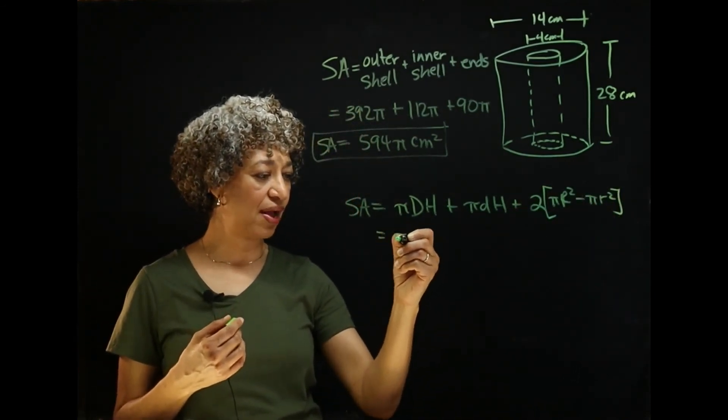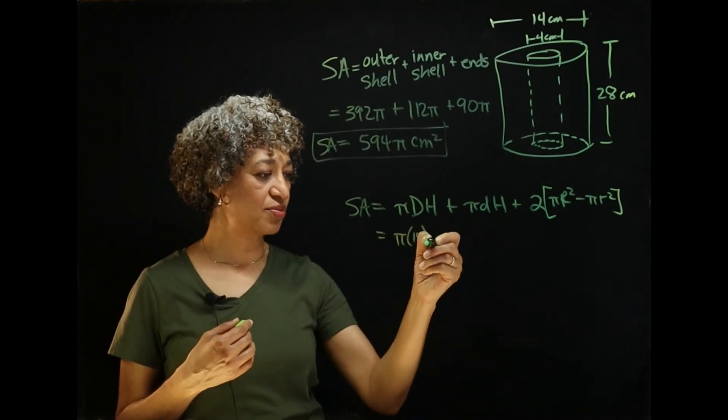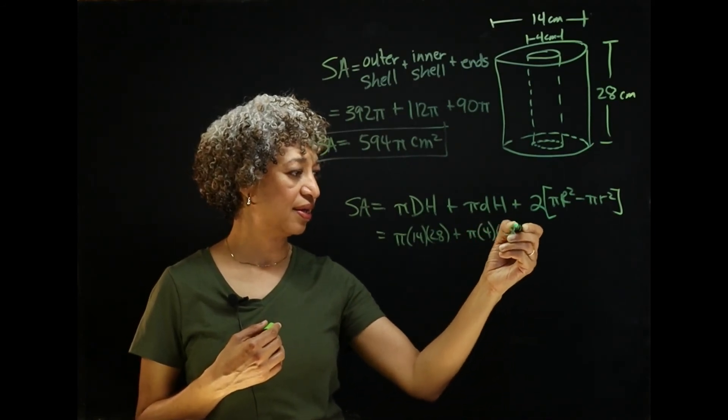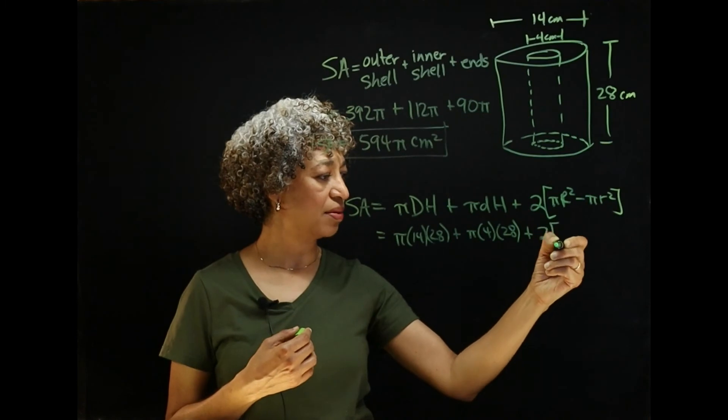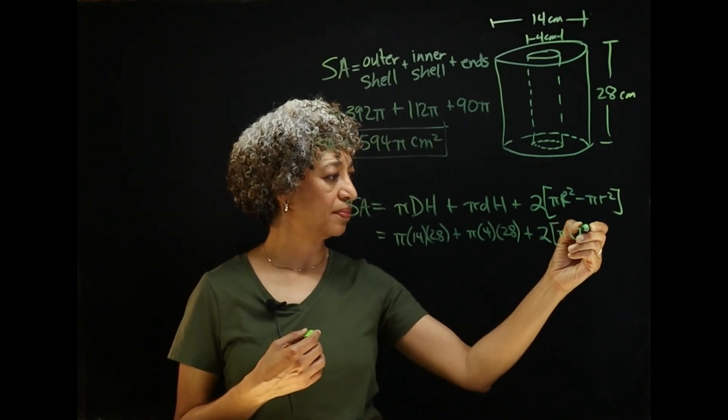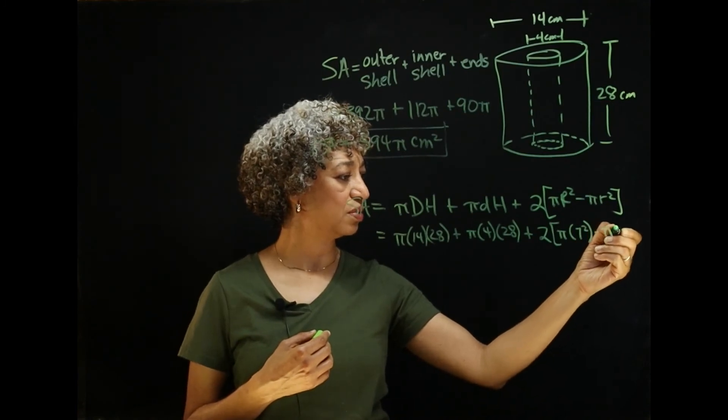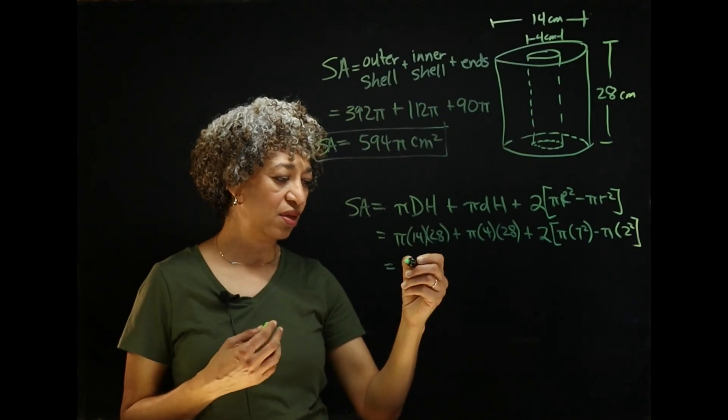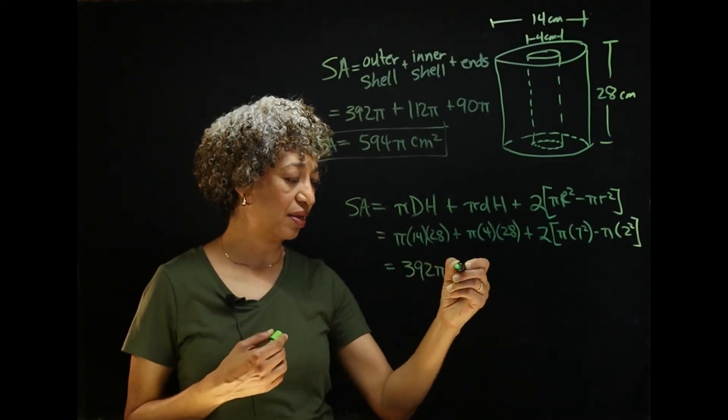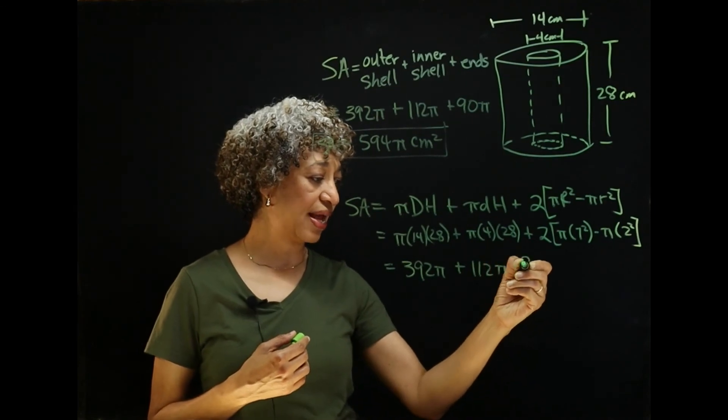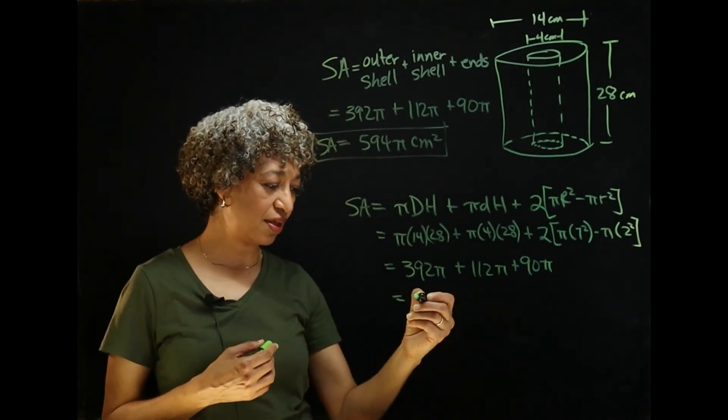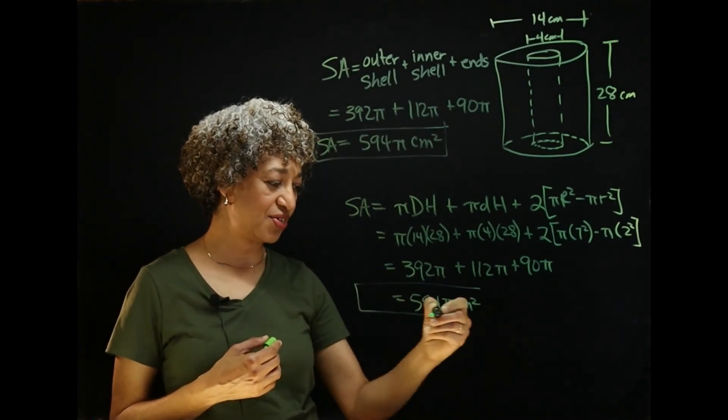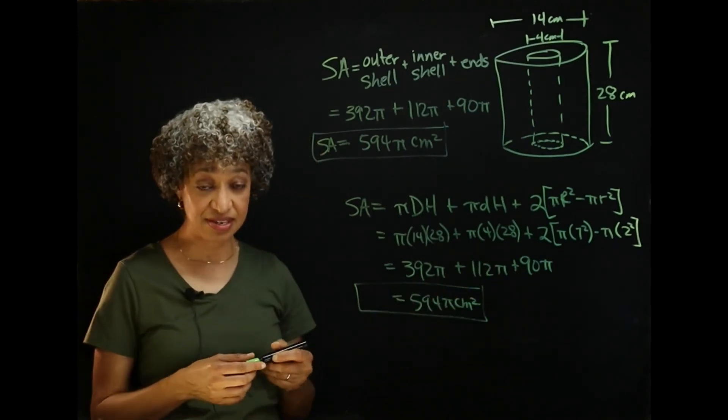So, plugging in our numbers, we have pi times 14 times 28, plus pi times 4 times 28, plus 2 times the big radius 7 squared minus the little radius 2 squared. And so, when we simplify, we get the same numbers. 392 pi, plus 112 pi, plus 90 pi, for a total of 594 pi square centimeters. That is the surface area using the formula. It's the same thing.